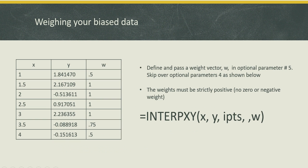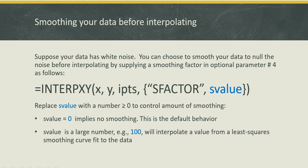So if your data is biased, you can supply a weight vector in argument number five and simply you would have to assign weights that reflects the relative importance of your data points. So one is the most important, most significant, and any value less than one is less significant. The weights must be strictly positive. No zero or negative weights are allowed.